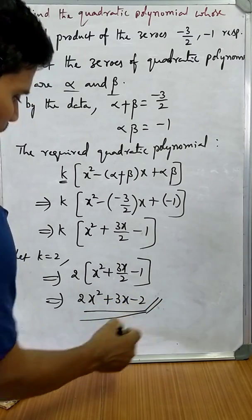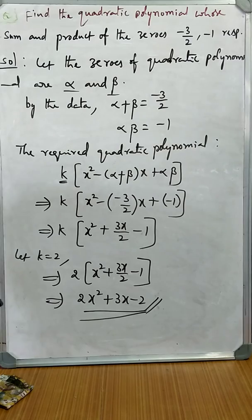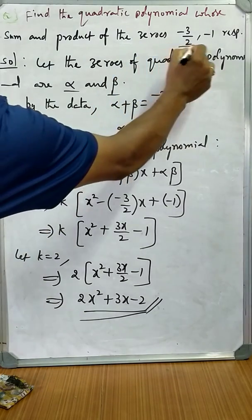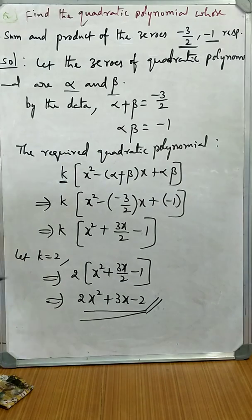This is the quadratic polynomial whose sum of the zeros is minus 3 by 2 and the product of the zeros is minus 1. That's all. Thank you.